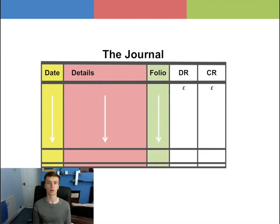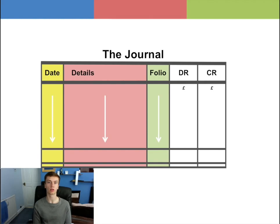Then the folio column, which provides a quick reference of where the other account can be found in the accounting system. For example, the general ledger would be GL, the sales ledger would be SL, and the purchase ledger would be PL. The last two columns to the right are the debit and credit columns.